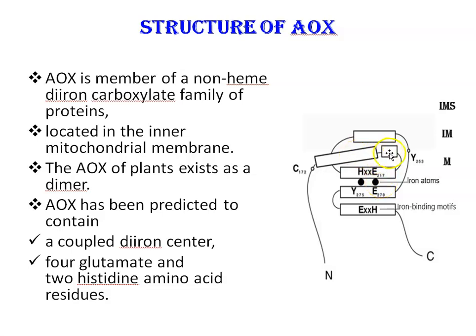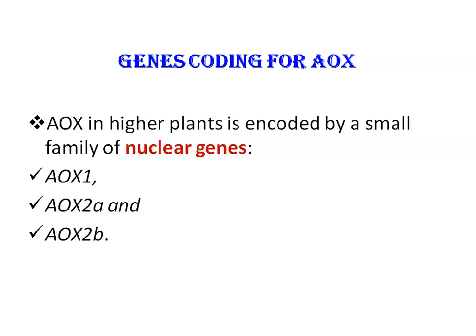Non-heme di-iron carboxylate family of proteins are distinguished by an iron-binding matrix consisting of six conserved amino acids. Regarding genes coding for AOX, in higher plants AOX is encoded by a small family of nuclear genes such as AOX1, AOX2a, and AOX2b.